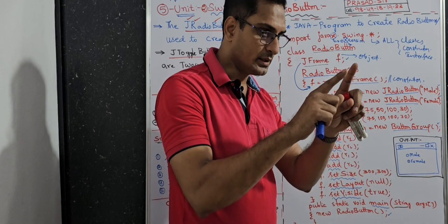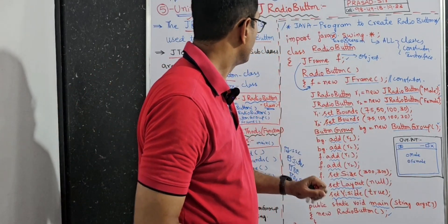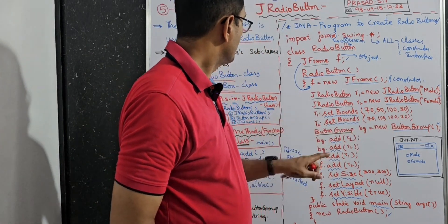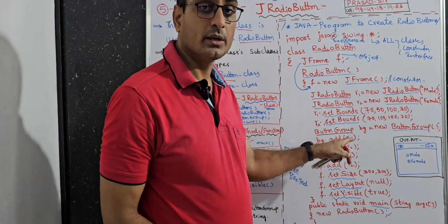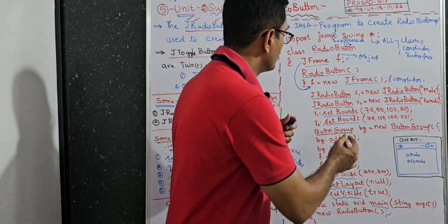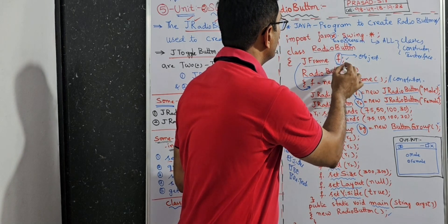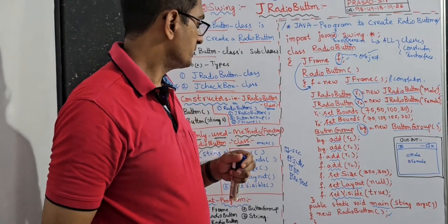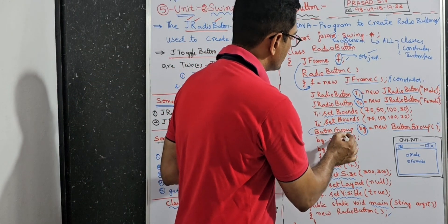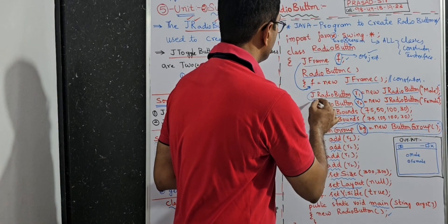And ButtonGroup — ButtonGroup is a class. BG is an object. Here BG, R2, R1, F — these are objects. These are the syntax for creating an object. For example: class name, space, object name, equals new keyword, constructor, semicolon. Constructor is a special type of method which has the same name as the class name.